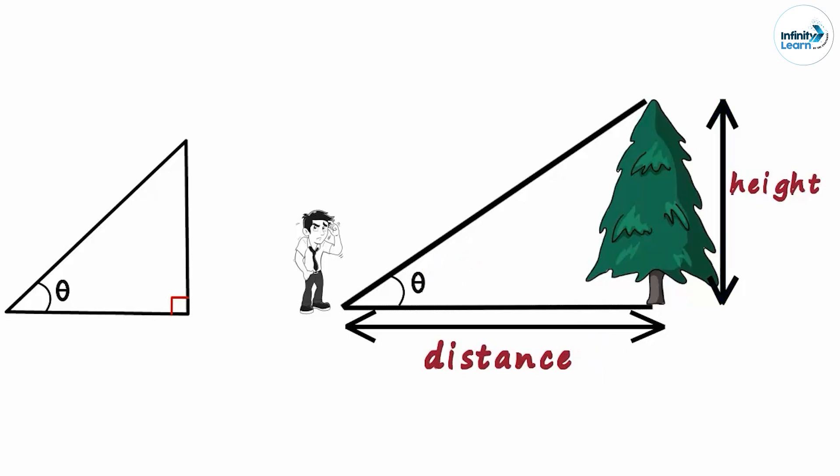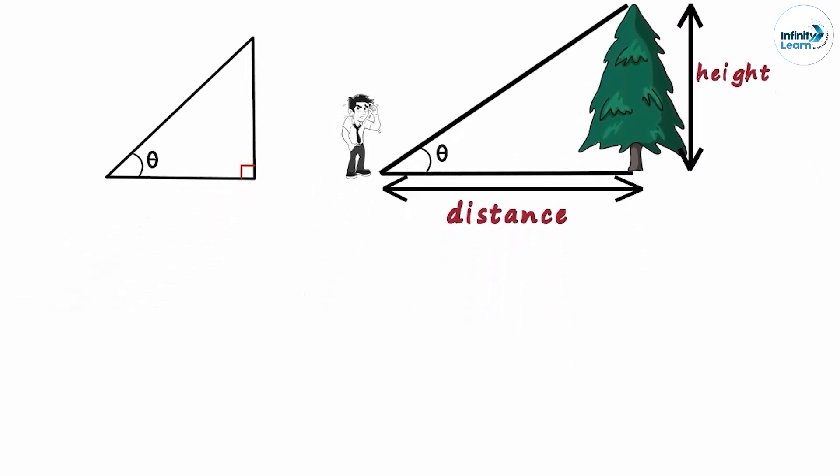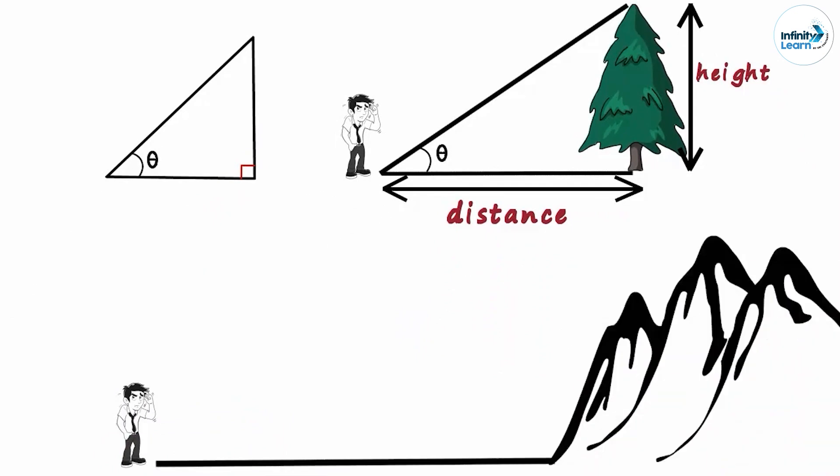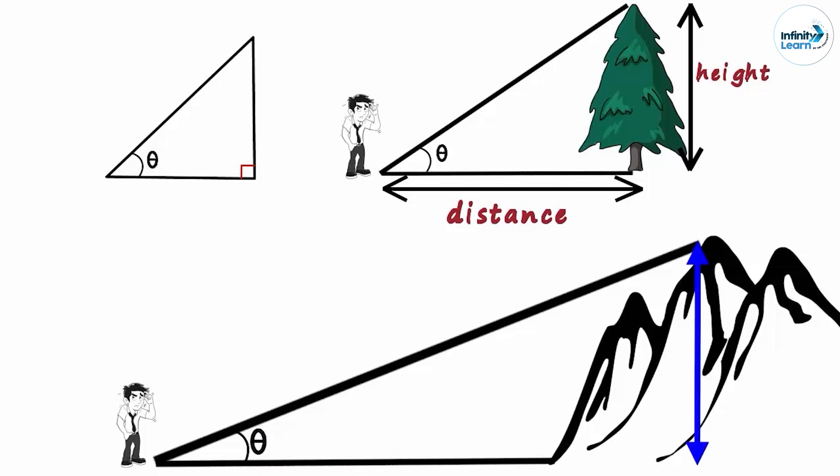Finding the height of a tree may not sound appealing to you. But the next example surely will. This time, Zen wants to find the height of a mountain. If this distance is known and this angle is known, then the height can easily be found out. But how? That's precisely what we will try to understand in Trigonometry.